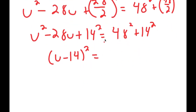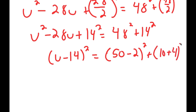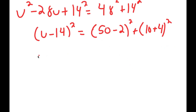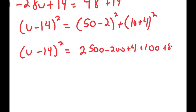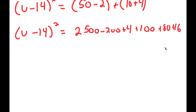So u minus 14 squared equals 48 squared plus 14 squared. I'll rewrite 48 as 50 minus 2 and 14 as 10 plus 4. Expanding: u minus 14 squared equals 2500 minus 200 plus 4 plus 100 plus 80 plus 16. Adding these up gives u minus 14 squared equals 2500.